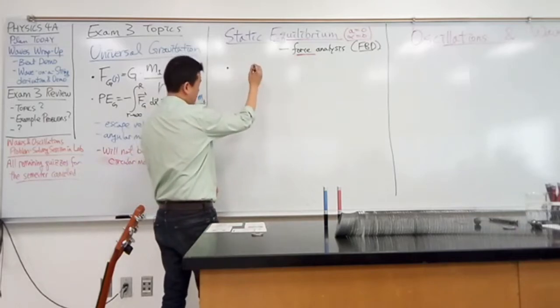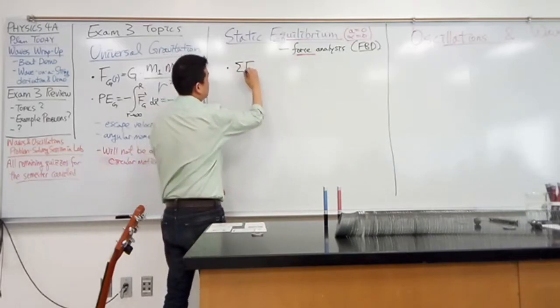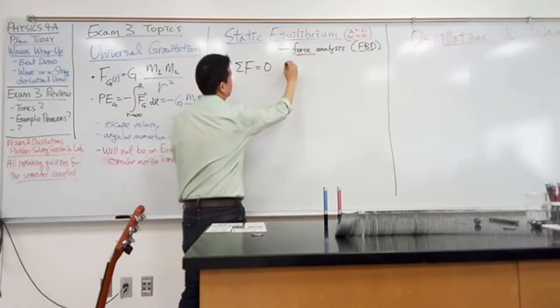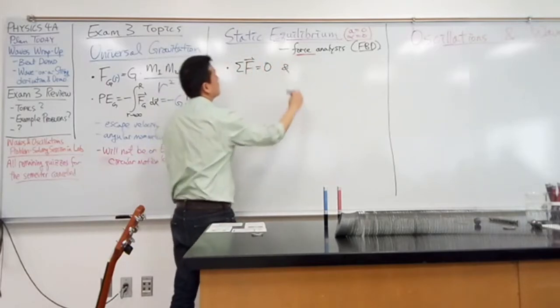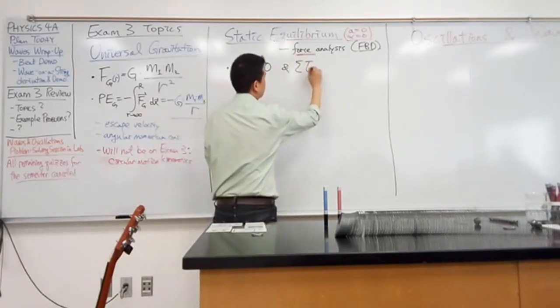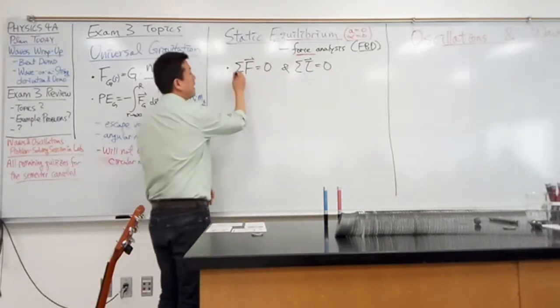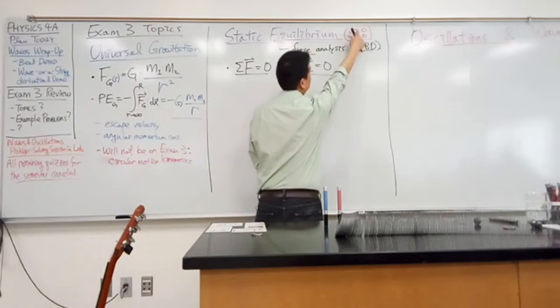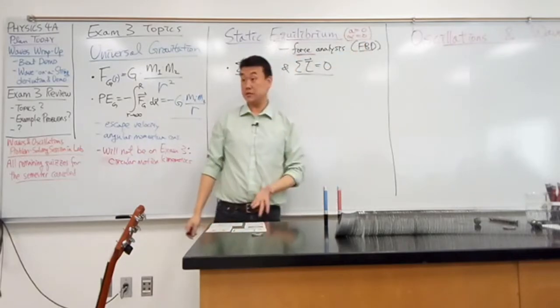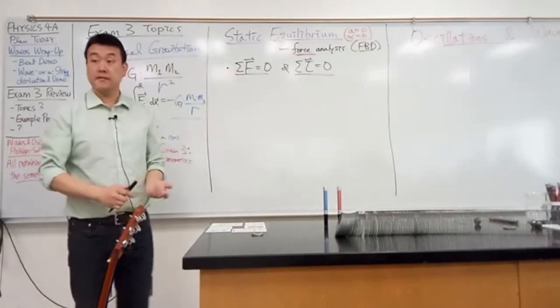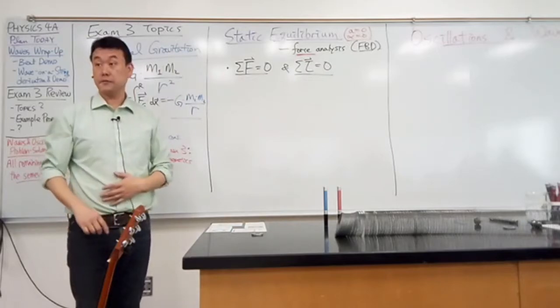That equilibrium condition is that net force is equal to zero as a vector, and net torque, also as a vector, is equal to zero. This is all tied to the fact that acceleration is zero and angular acceleration is zero. That's why net force and net torque has to be equal to zero.